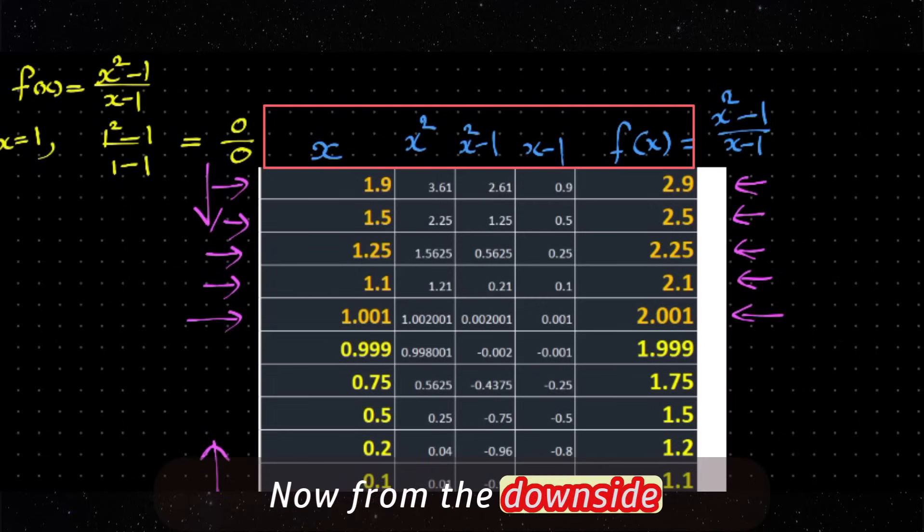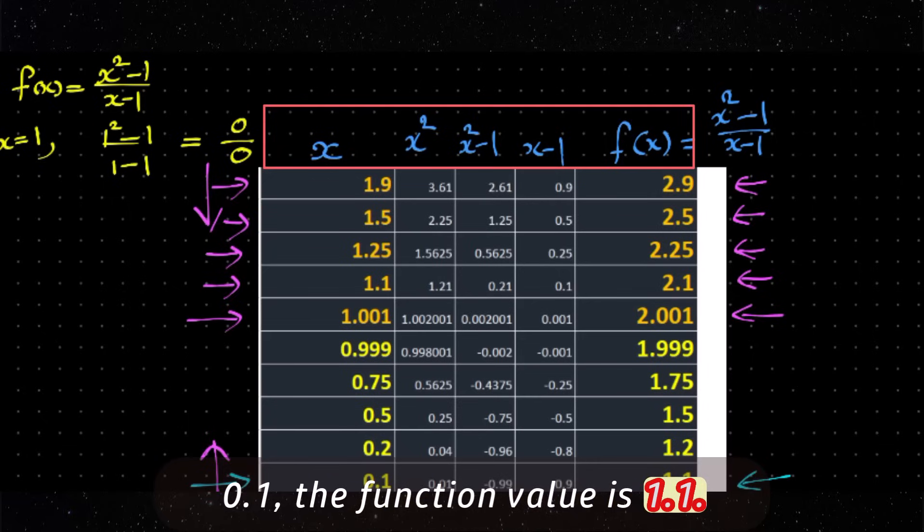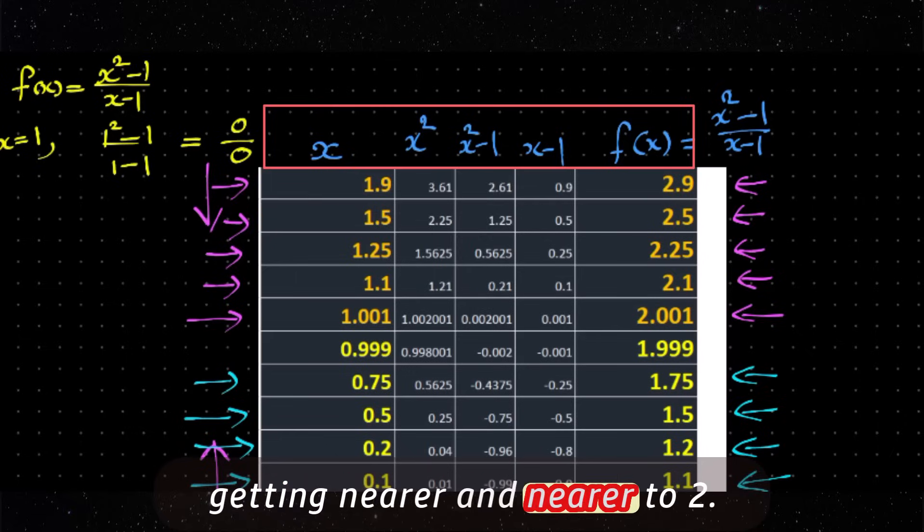Now from the down side, values less than 1. At x = 0.1, the function value is 1.1. Moving closer to 1, we see the values go up 1.5, 1.9, getting nearer and nearer to 2.